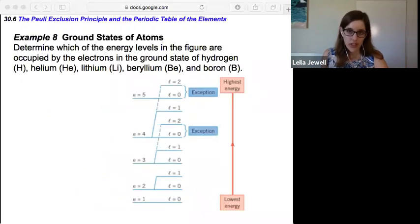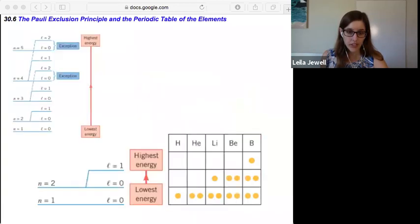So with this in mind, we can determine the ground states of atoms in example eight. Which of the energy levels in the figure are occupied by the electrons in the ground state of hydrogen, helium, lithium, beryllium, and boron? These are the first few atoms. This is something that I don't expect you to have their atomic numbers memorized or the number of electrons that each of them have memorized. But being able to fill in and understand how the energy levels fill up is an important process.